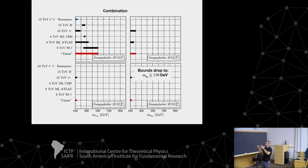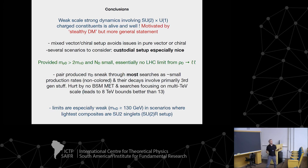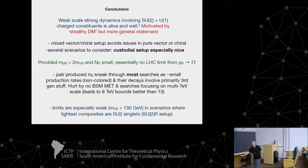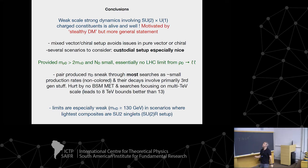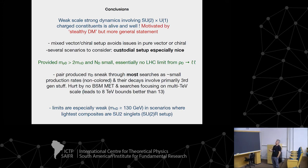Weak scale, strong dynamics is alive and well. This was motivated by this stealthy scenario where I had these baryons that could be out there, and LHC is the best way you're going to see any hints of that sector, but it's also a more general statement. Mix vector chiral avoids any issues with purely one of them. Custodial setup's nice. Pair-produced pions sneak through most decays. Small production rates, their decays into third-generation stuff, no BSM met, and some biases here. Limits are very weak.